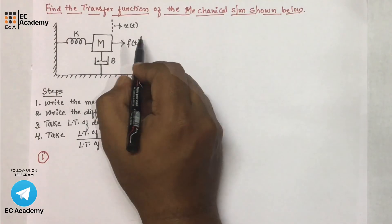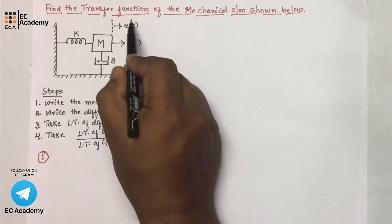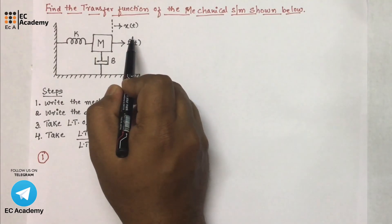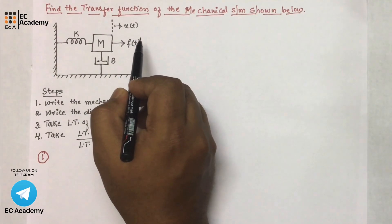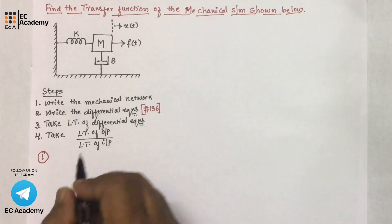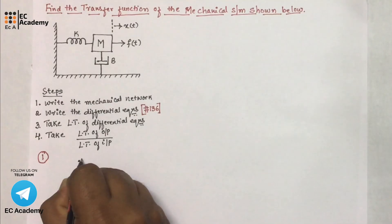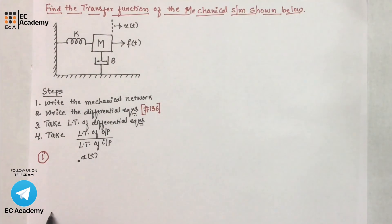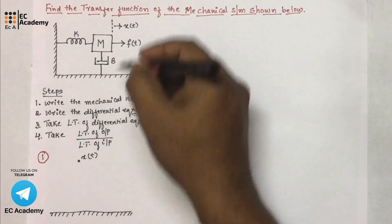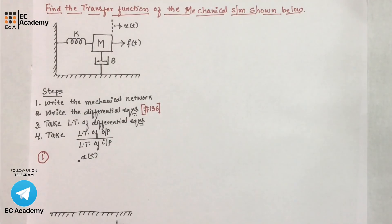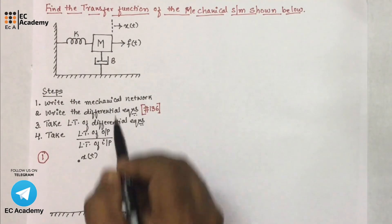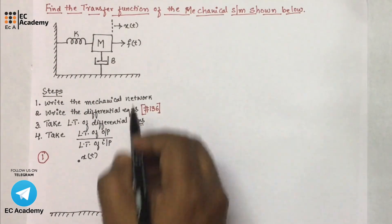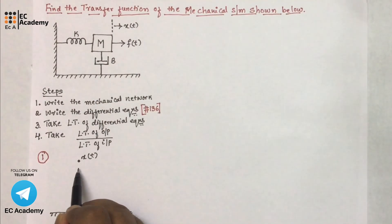To write the mechanical network, we will identify the input as f(t) and the output as x(t), where f(t) is the applied force and x(t) is the displacement. We will use node analysis to write the mechanical network. In node analysis, we consider displacement as a node. We take x(t) as a node and write the reference line. The number of nodes equals the number of displacements. Since there is only one displacement given here, we are taking only one node.